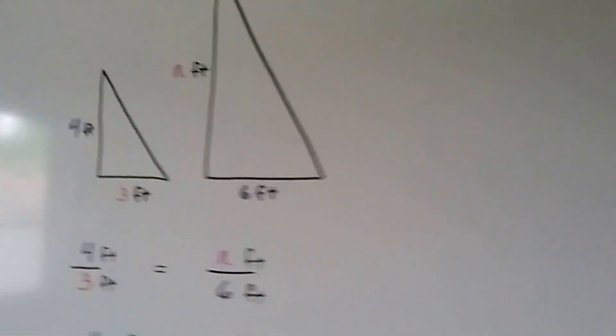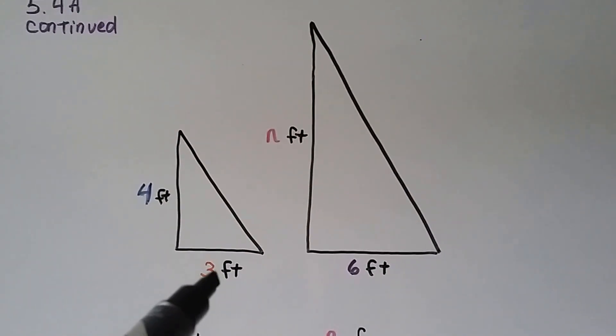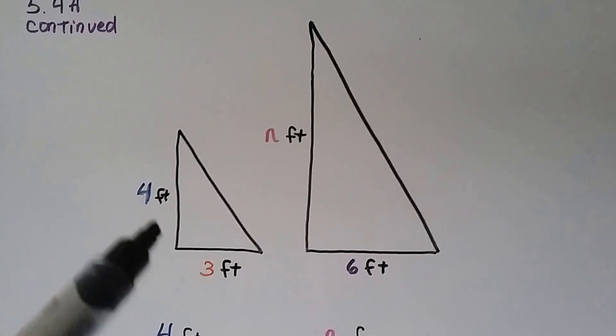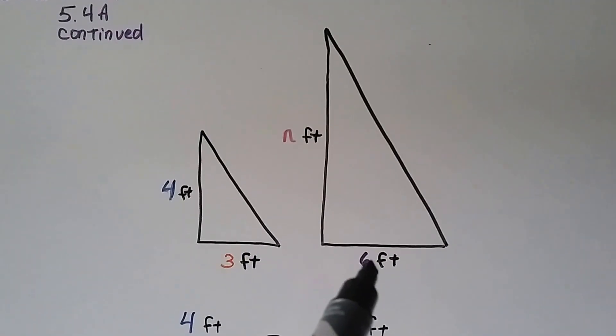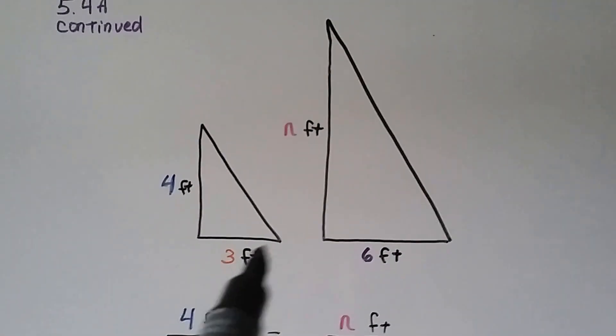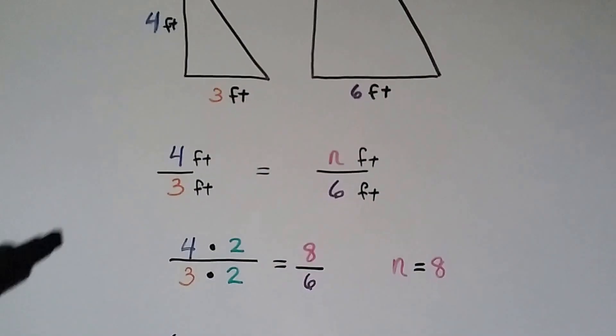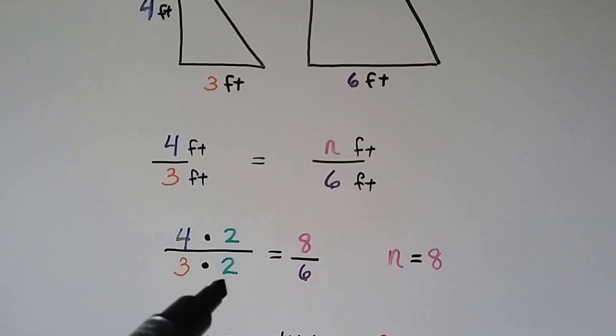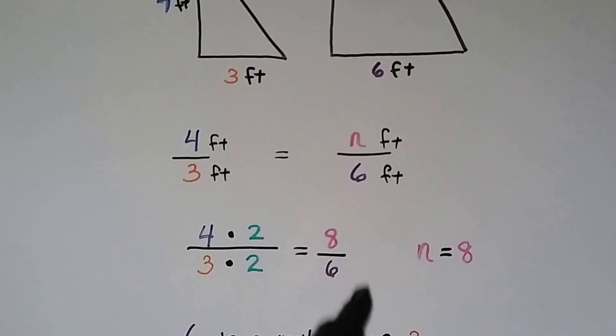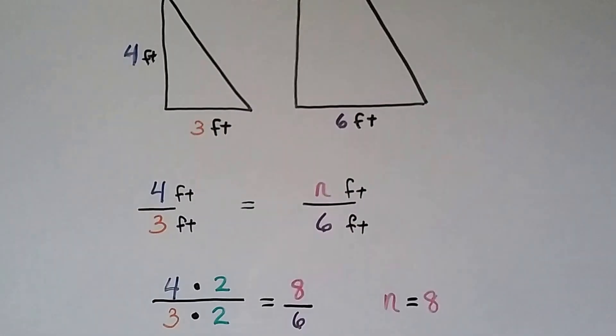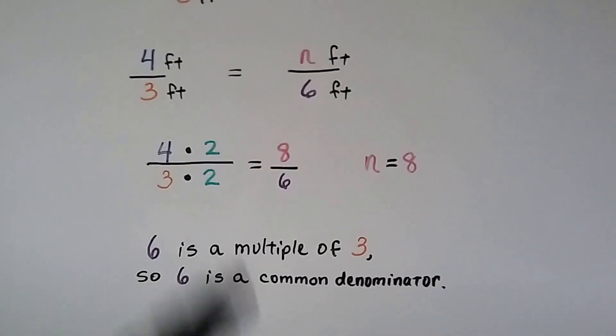Look at it if we had two triangles. We knew that the bottom here was 3 feet and this is a 4 foot length, and the one next to it was scaled up to a larger version of it, and that became 6 feet. What would that side be? If it went from 3 feet to 6 feet, it doubled. So that 4 feet would have to double. We multiply both by 2 to get a ratio that's in proportion. We know n is equal to 8. And 6 is a multiple of 3, so we know 6 is a common denominator.